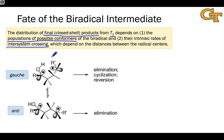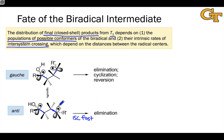The diradical can adopt a gauche conformation — where the two radical-bearing carbons have a 60-degree dihedral — or an anti conformation with a 180-degree dihedral. Although intersystem crossing in the anti conformer is relatively rapid because the radical centers are far from one another, for that same reason no cyclization occurs from this conformation, and reversion to starting material is impossible because the transferred hydrogen is very far from the gamma carbon. So only elimination occurs from the anti conformer.